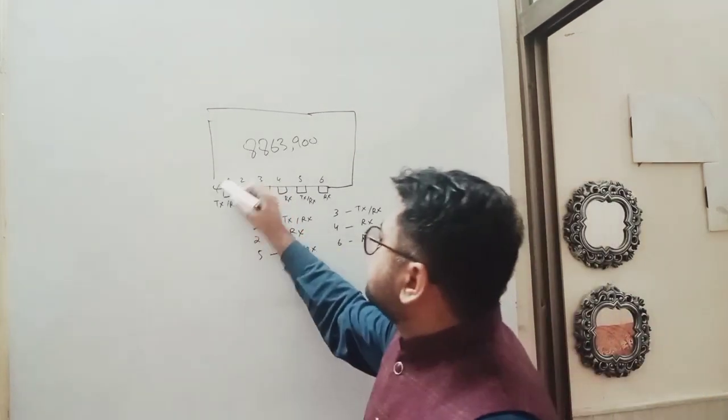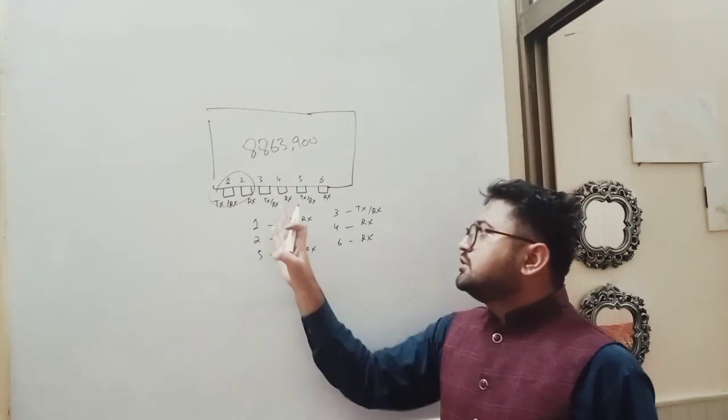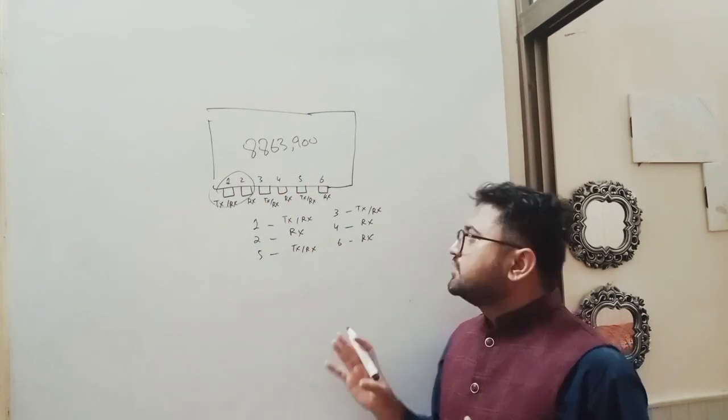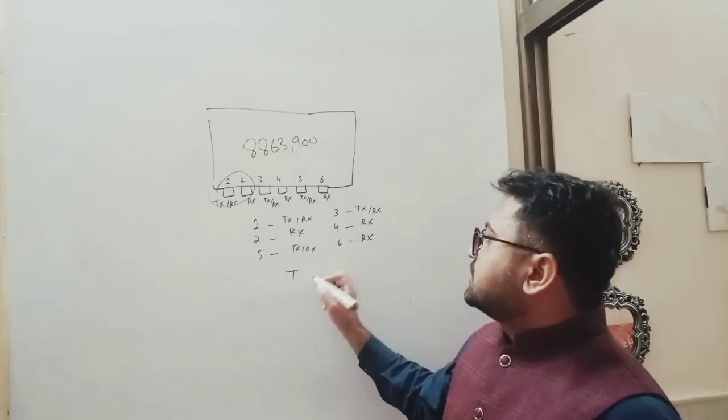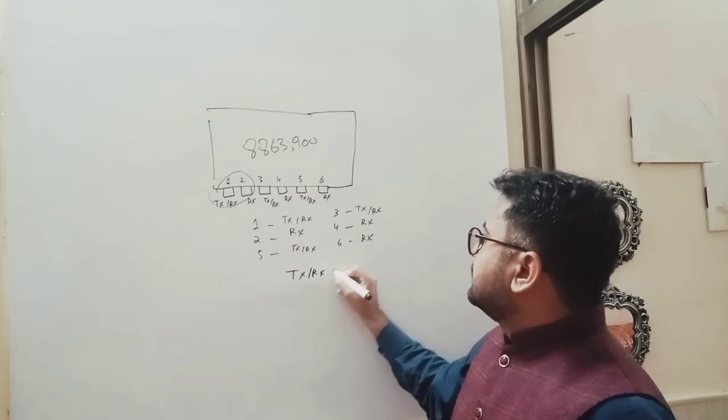So for the first two ports, we use sector 1. These are the first two ports which we use for the first sector. TX-RX plus RX.